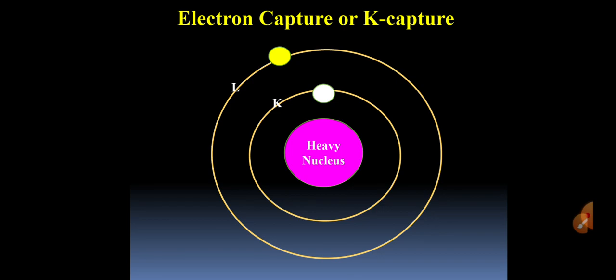Now this vacant position in K-shell is filled by another electron which is shifted from upper L-shell. And during this transition, characteristic X-ray or we can say photon is emitted, whose energy is equal to energy difference between K and L shells.